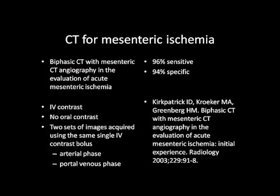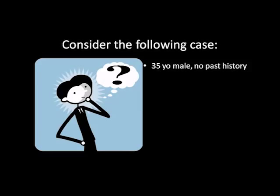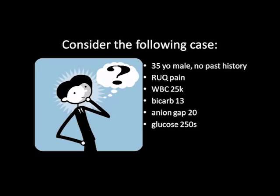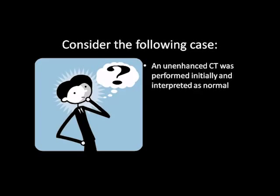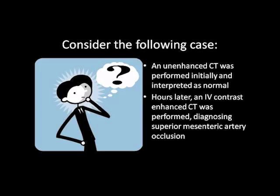Consider the following case. A 35-year-old male with no past medical history presenting with right upper quadrant pain, a white blood cell count of 25,000, a bicarbonate of 13, an anion gap of 20, and a glucose in the 250 range. An unenhanced CT was performed initially and interpreted as normal. Hours later, an IV contrast-enhanced CT was performed diagnosing superior mesenteric artery occlusion. Sadly, diagnostic delay led to the patient losing his entire small bowel, resulting in TPN dependence for life.